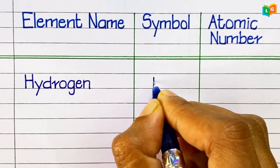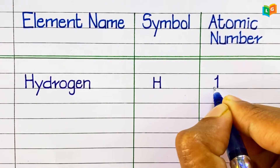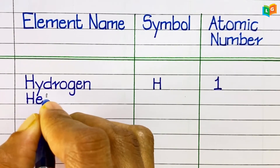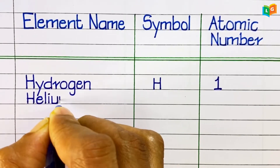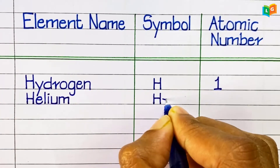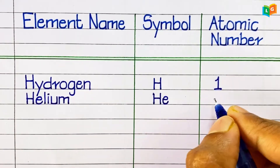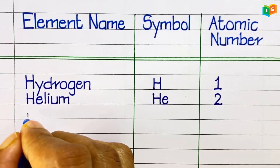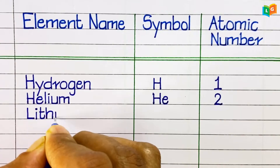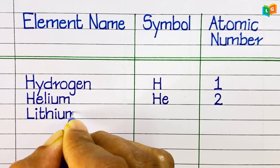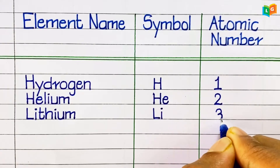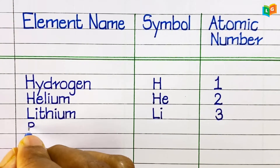First element name is Hydrogen. Symbol of Hydrogen is H and atomic number 1. Helium, symbol is He, atomic number 2. Lithium, symbol Li, atomic number 3.